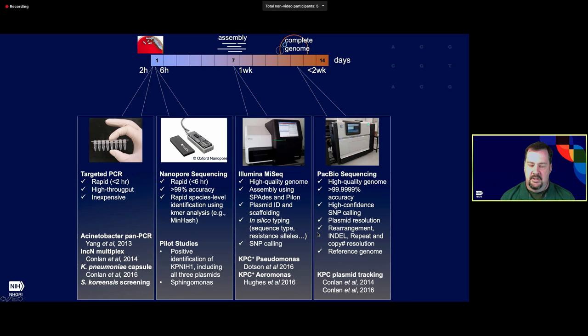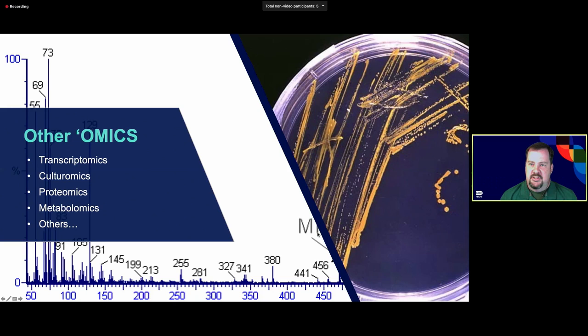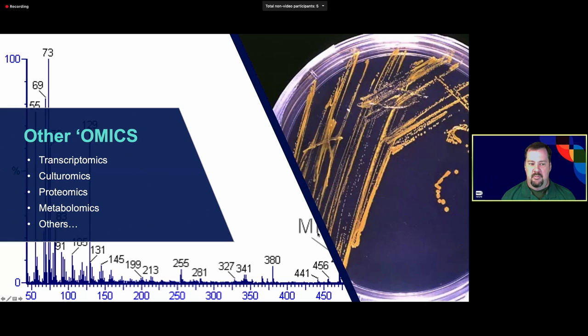Other omics technologies people use to look at the microbiome include transcriptomics — looking at the actual RNAs transcribed from genes. Because looking at just the genome tells you what genes the bacteria has but not whether they're being expressed, transcriptomics helps get at that. Culturomics is large-scale culturing of bacteria under different conditions. Proteomics looks at the proteins in a cell or sample, and metabolomics looks at the small molecules. These are all different complementary methods, and most still have a genomic component that people try to combine with one of these other omic methods.